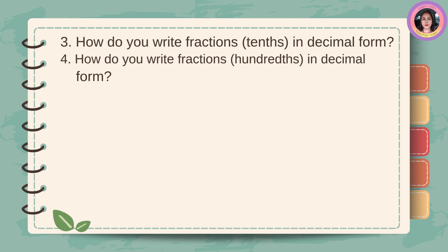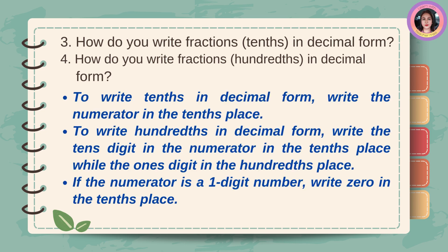How do you write fractions in tenths in decimal form? How do you write fractions in hundredths in decimal form? Write the tenths digit in the numerator in the tenths place, while the one's digit in the hundredths place. If the numerator is a one-digit number, write zero in the tenths place.